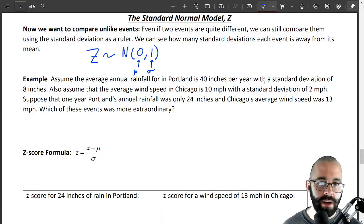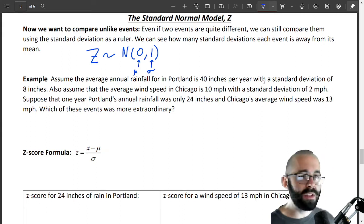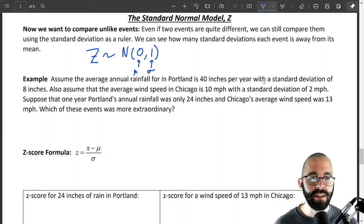So one year Portland had an annual rainfall of 24 inches and Chicago had a wind speed of 13 miles an hour. What was more extraordinary? What was more irregular? What was more out of the norm? What was more bizarre? Now you could use a computer and calculate this, calculate the probability of each of these events happening.